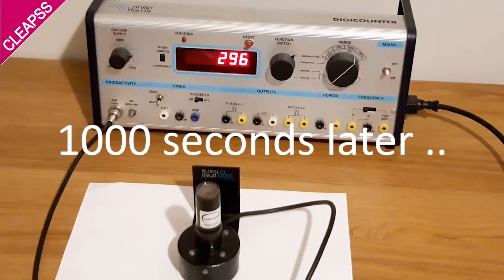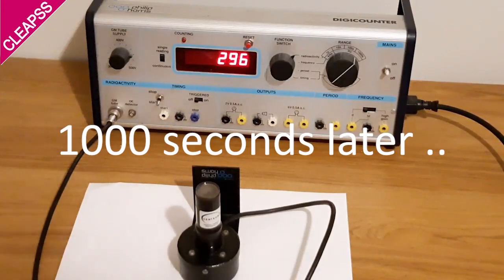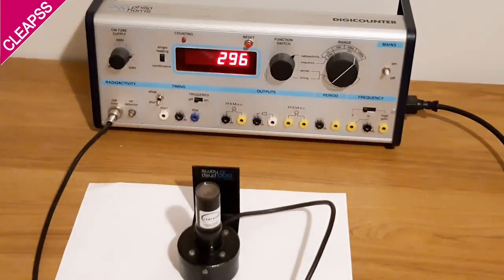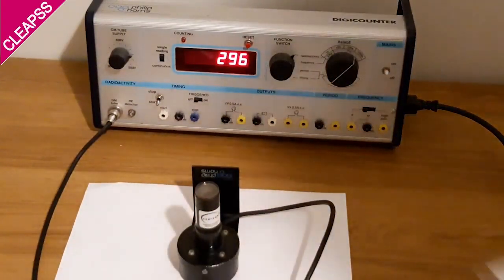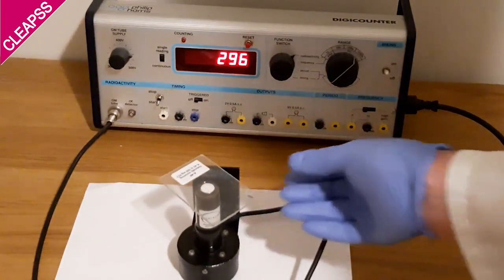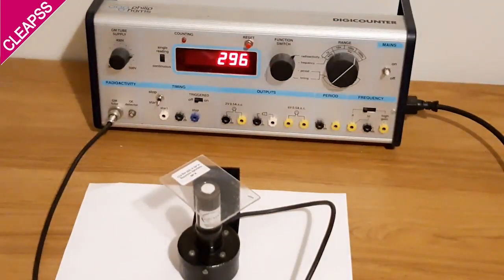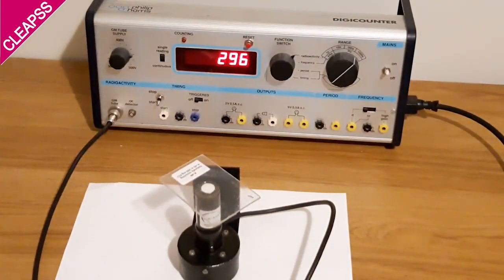So the background count is 296 and I make a record of that. I now put on the test source. Make sure that the active part of the source is right in the centre of the GM tube and I start again to count for 1000 seconds.